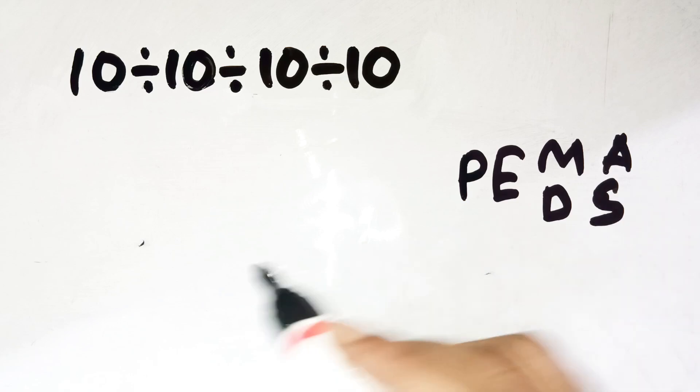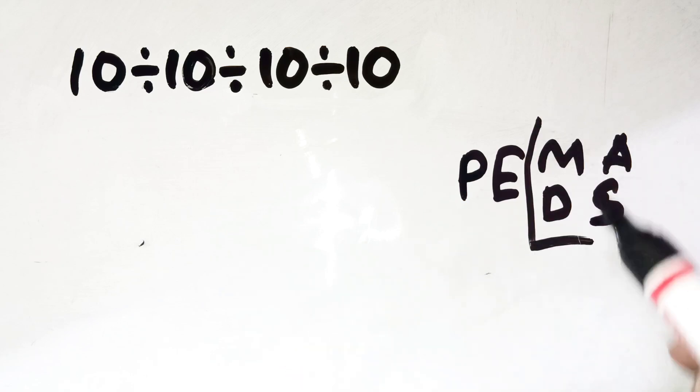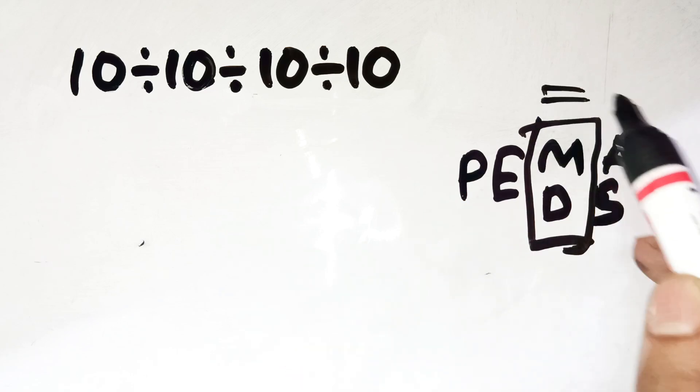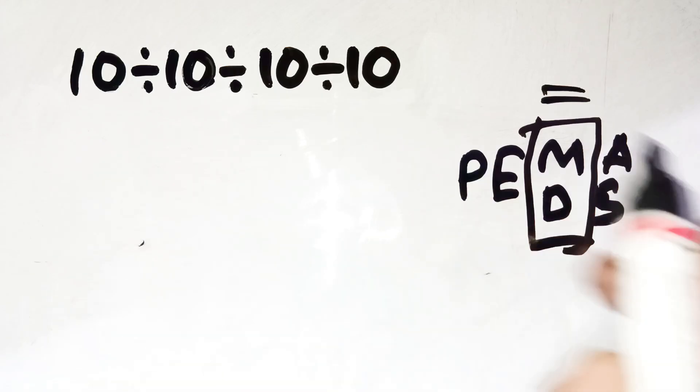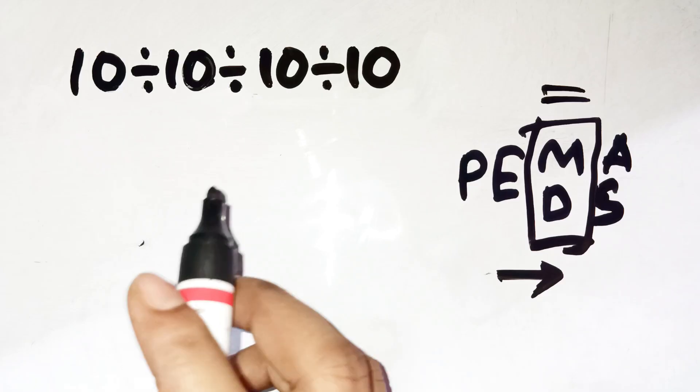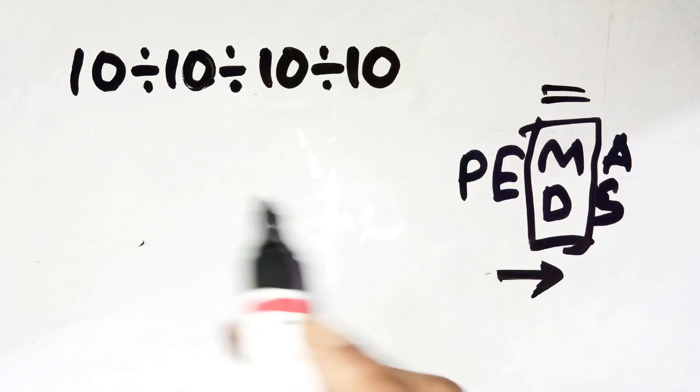But the important detail is multiplication and division share the same priority. And when they appear in a row like this, you must go left to right, no jumping around. So let's do this properly.